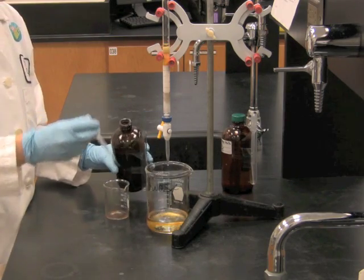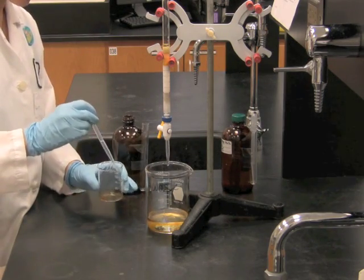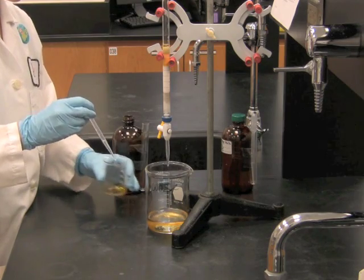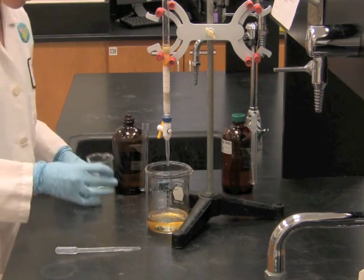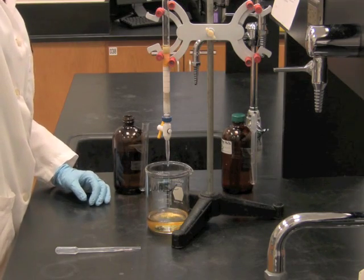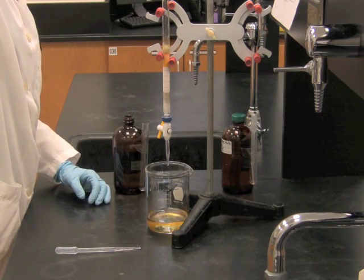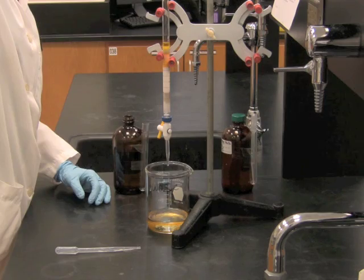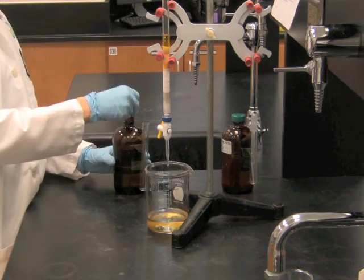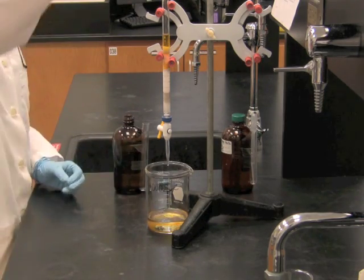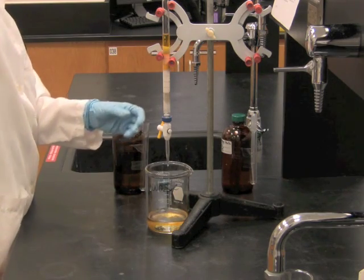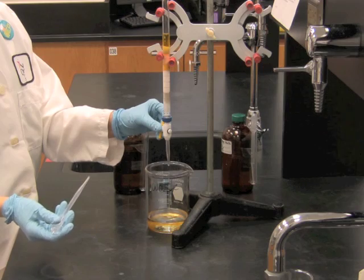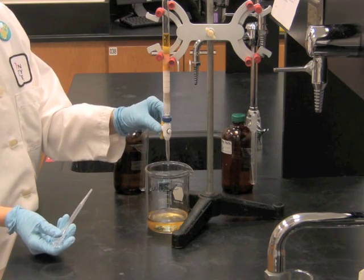We're going to rinse our beaker with a little bit of petroleum ether and add that to the column. Also wash the sides and inside top of the column with some petroleum ether and let this drain to the top of the sand.